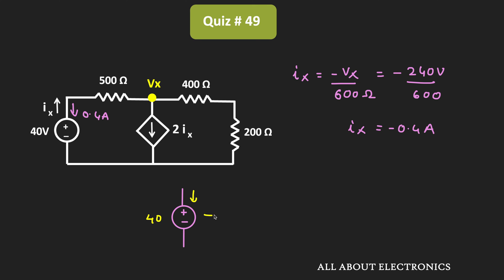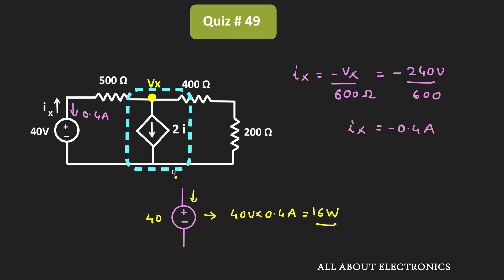The absorbed power is equal to 40 volts times 0.4 ampere, which is equal to 16 watts. Similarly, let us find out the absorbed or delivered power for the dependent source.